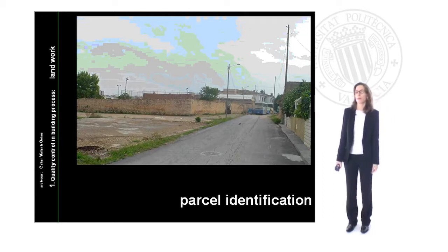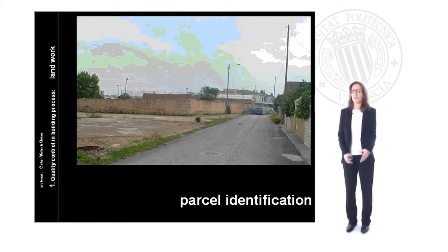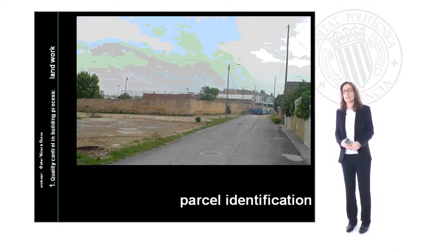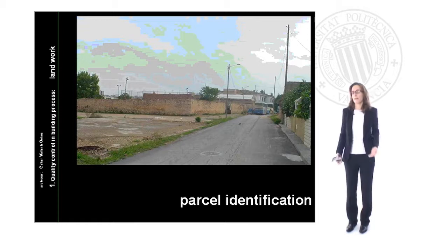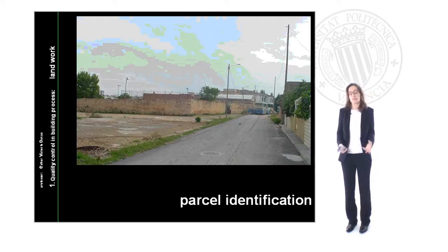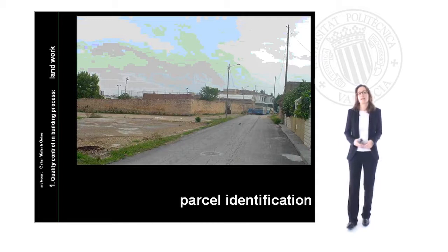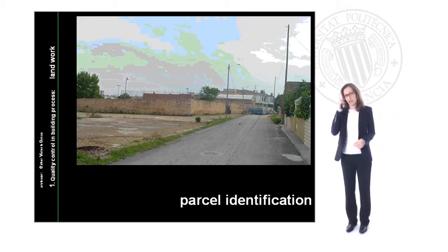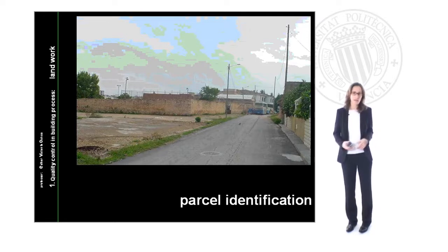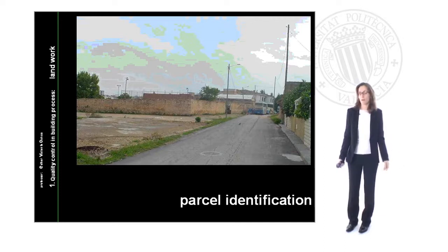We can begin with parcel identification. The first unit we have to control during the building process is the land work. Inside the land work is the identification of the parcel depending on where it is. A parcel can have different characteristics between an urban area and a non-urban area. In the non-urban case, identification comes from geographic and urbanistic data that configure the real situation of our parcel.